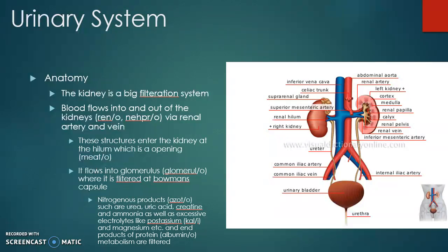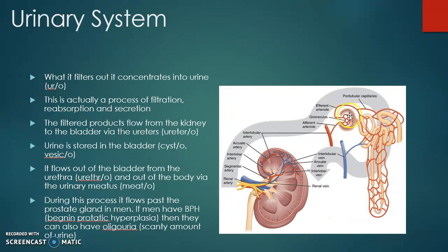Products of protein metabolism and albumin are also filtered. Albumin is a type of protein in your body. Here you can see the nephron — it comes into the glomerulus, this is Bowman's capsule, and this is a kidney cell called a nephron. You can see all the arteries and capillaries around it as filtering is going on. The blood comes in via the artery and goes out the vein once it's been filtered.